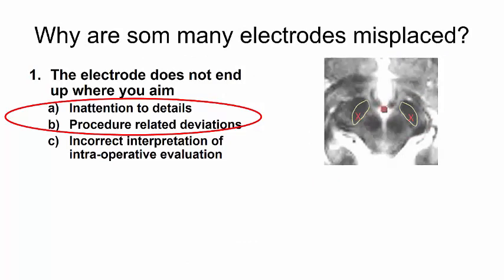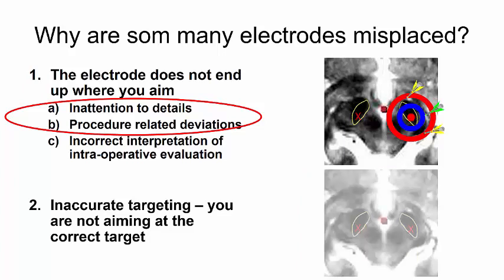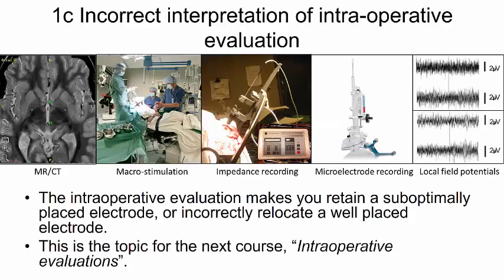So, why are so many electrodes misplaced? We will in this course focus on electrodes which do not end up in the intended target due to inattention to details and procedure-related deviations. We have already discussed inaccurate targeting in the previous course regarding targeting in stereotactic functional neurosurgery. And we will in the next course discuss incorrect interpretation of intraoperative evaluation.